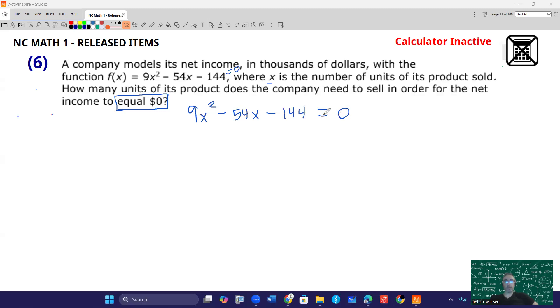So here is your equation: 9x² - 54x - 144 = 0. Now, any reasonable person would pick up a calculator and just see where it crosses the x-axis, but we don't have that luxury as this is calculator inactive. So we're going to have to figure out how to reduce this. The first thing I'm going to look at is there's a 9 and a 54, and I think maybe those are divisible by 9.